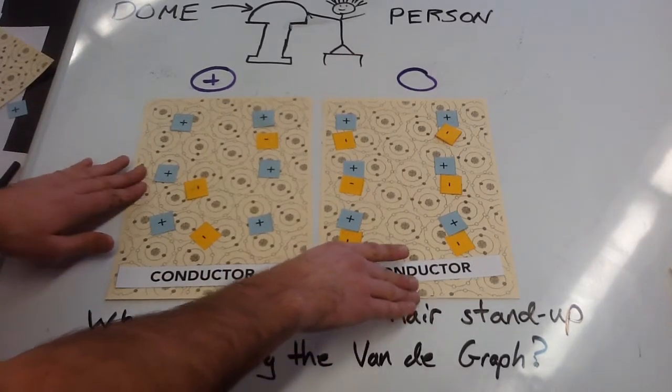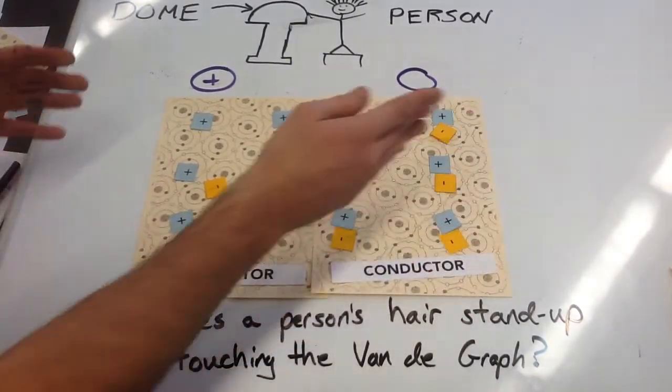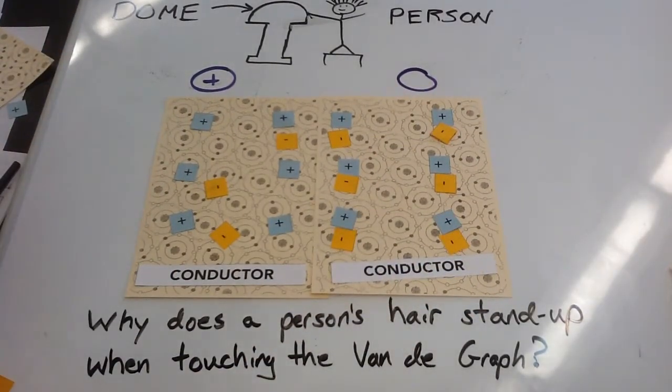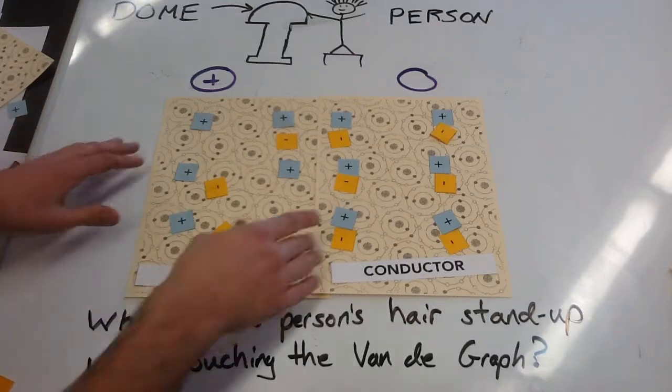And so when these two touch, electrons are going to want to move and nature wants to be chill. Electrons want to move from an area of high concentration to a low concentration to even out.